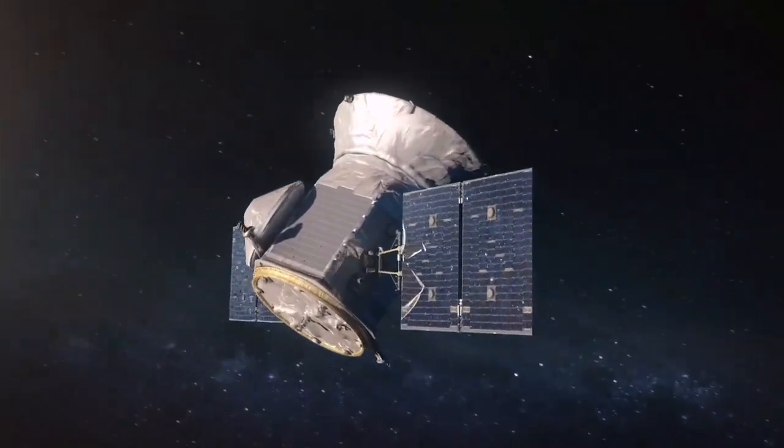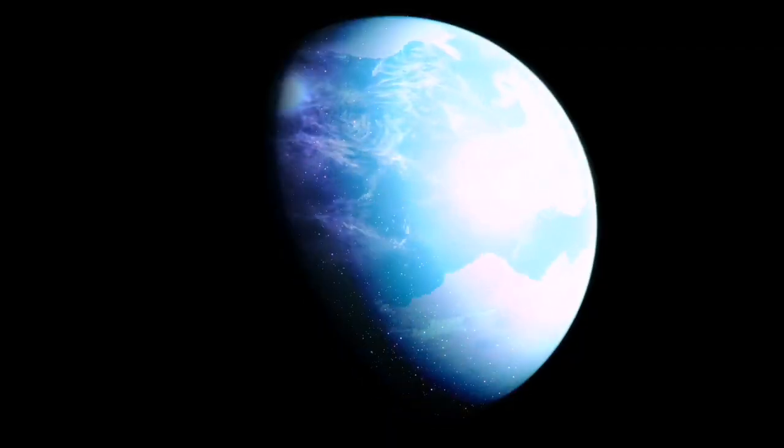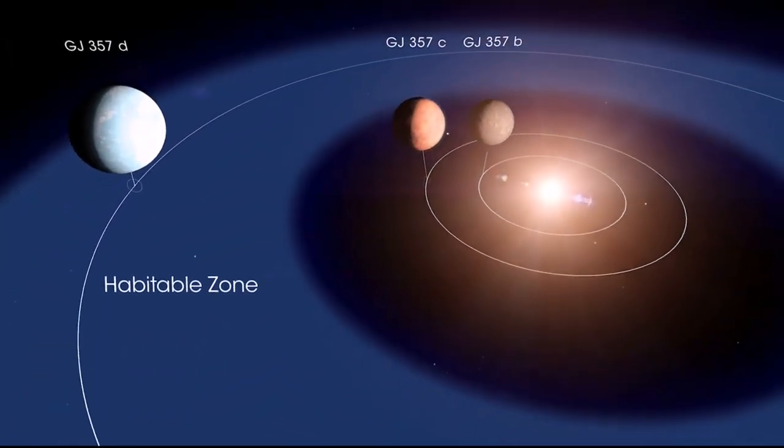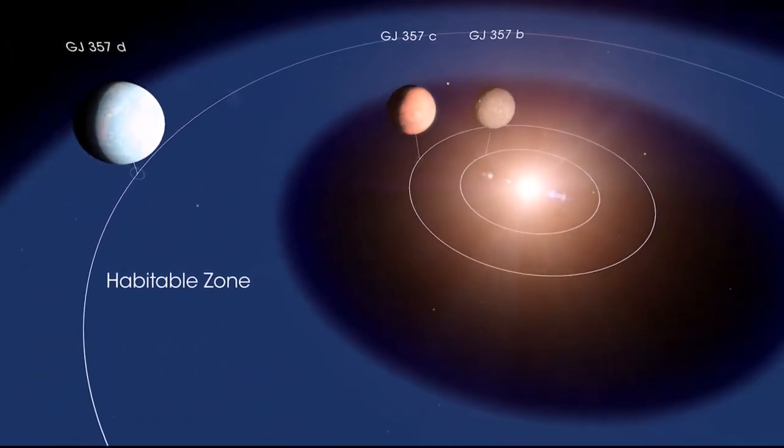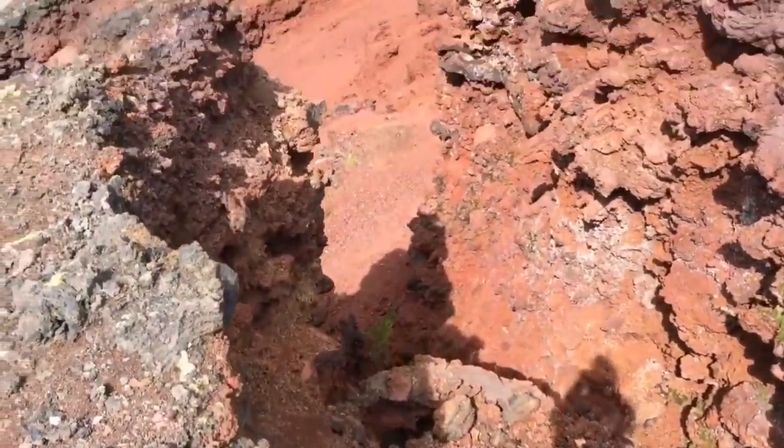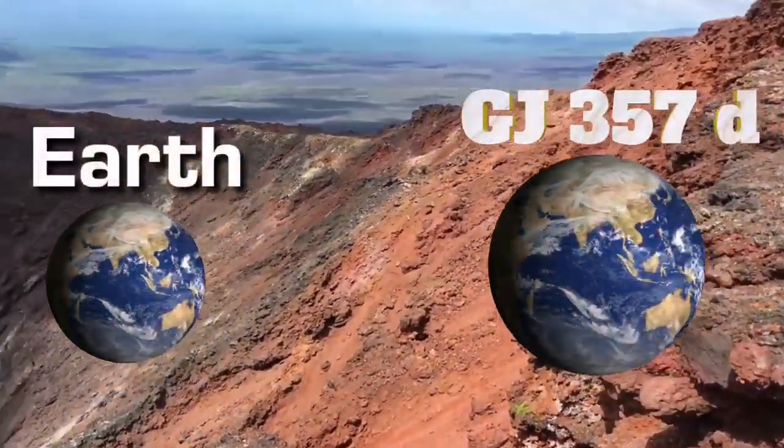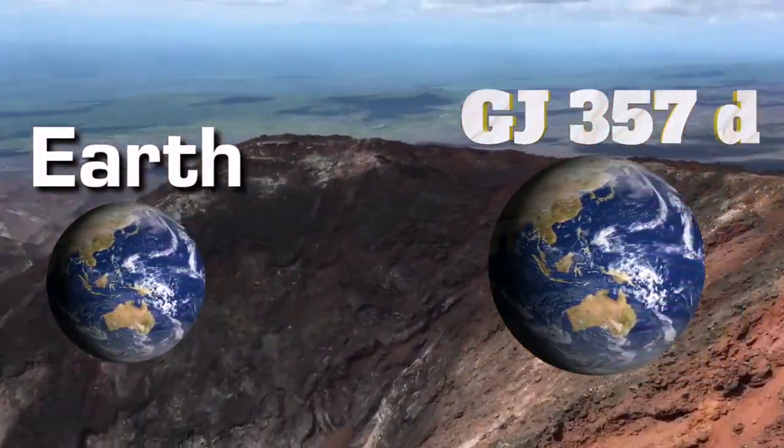The newest planet hunter of NASA, TESS, discovered a new exoplanet and scientists named it GJ357D. The planet is located in the star's habitable zone. If it is made of rocks, this planet's size may be around twice the size of our Earth.